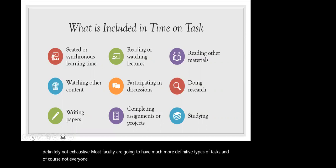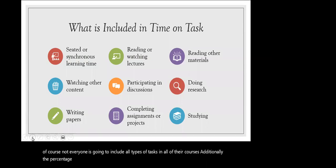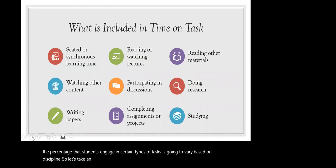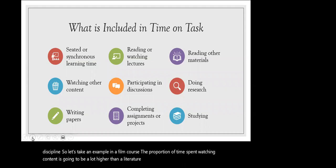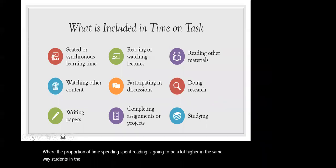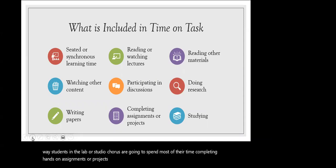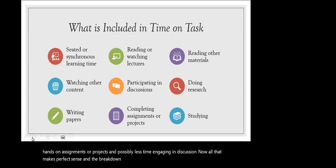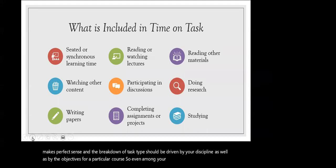Most faculty are going to have much more definitive types of tasks, and not everyone is going to include all types of tasks in all of their courses. The percentage that students engage in certain types of tasks is going to vary based on discipline. In a film course, the proportion of time spent watching content is going to be a lot higher than in a literature course, where reading time is higher. Students in a lab or studio course are going to spend most of their time completing hands-on assignments or projects, possibly with less time engaging in discussion.